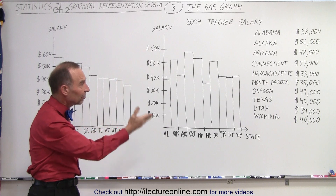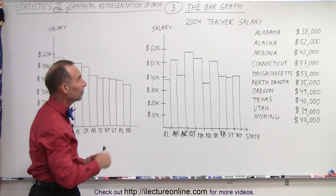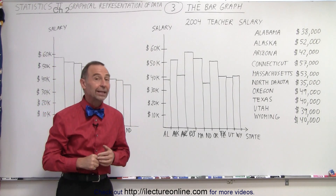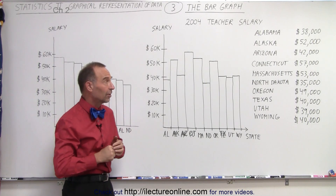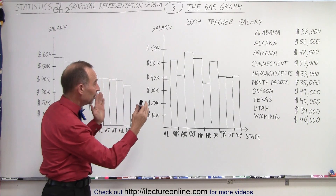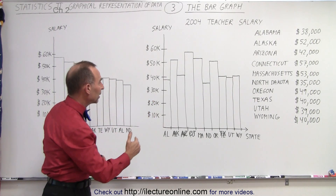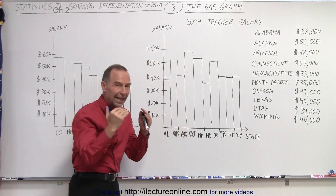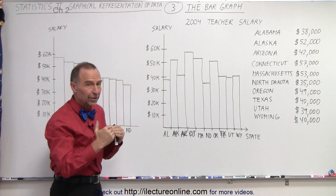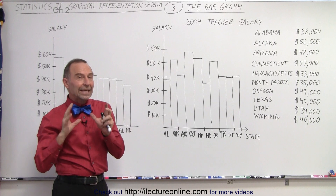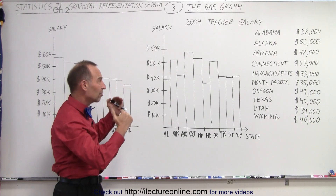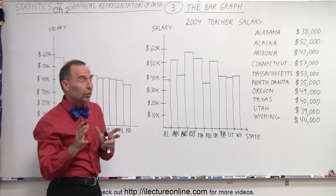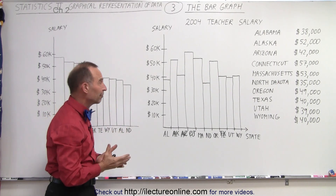So here we have 10 states listed, where in 2004 we have the average teacher's salary in each of those 10 states. If we put it in a bar graph like this, we can see the relative height, and so even though the data is relatively close together, it's a lot easier to see that one has a higher salary than another, compared to what it would look like if we used a pie graph.